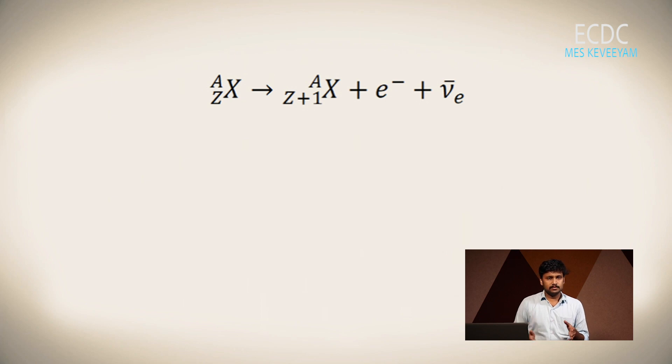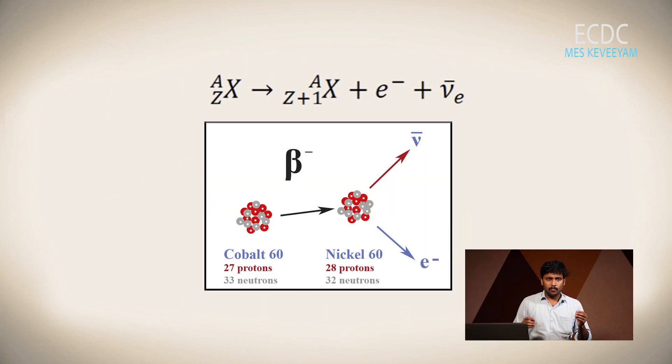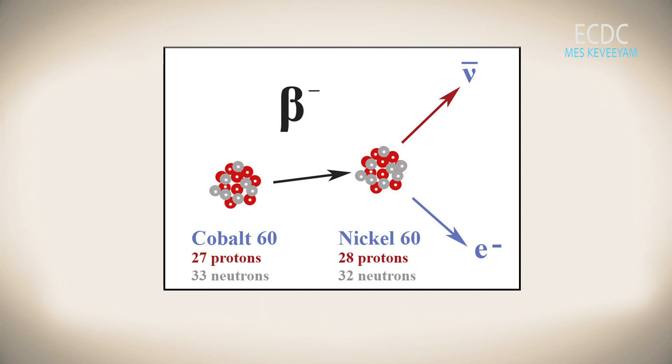The atomic number increases by one, so the material changes to a new element. For example, cobalt-60 changes to nickel-60. There are 27 protons in cobalt-60 and 28 protons in nickel-60. The number of neutrons is 33 in cobalt-60 whereas it is 32 in nickel-60. The next process is electron capture.